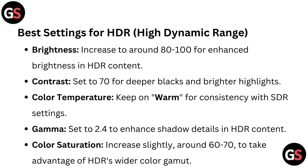Best settings for HDR — High Dynamic Range. Brightness: increased to around 80–100 for enhanced brightness in HDR content. Contrast: set to 70 for deeper blacks and brighter highlights.